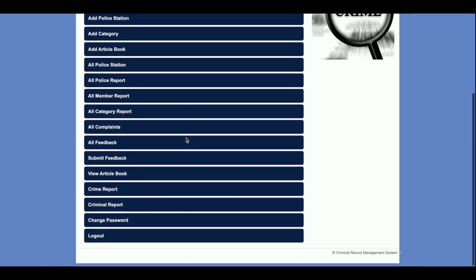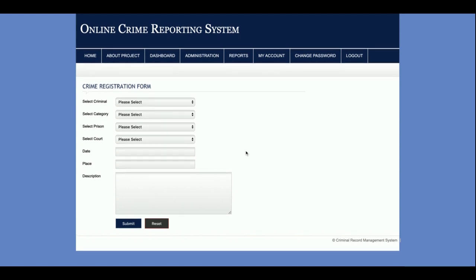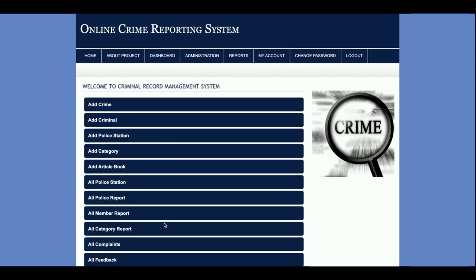The next user is the police. Once you log in as police, you can see the number of actions the police can perform. From 'Add Crime,' you can add a crime. There are four dynamic dropdowns in this form, and all their values come from the database. You can change, update, or delete these values without modifying the code — just update the values in the database or through the form.